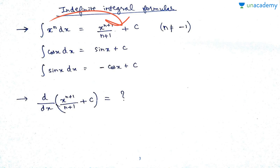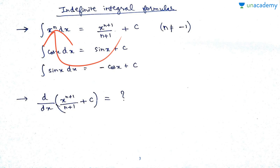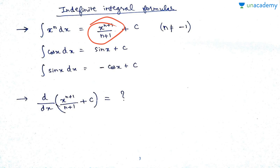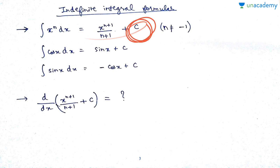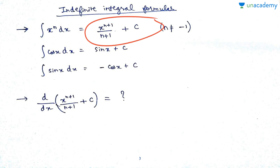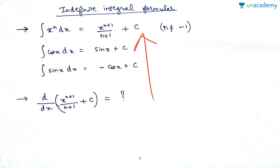This shows the link between integration and differentiation — that is why integration is often called the anti-derivative. You can use this to verify your formula. Note that n cannot equal -1, because the denominator would be zero, which is undefined. We add the constant C because the original function could have had any constant (10, 20, 30, 40) before differentiation, and we don't know its value.